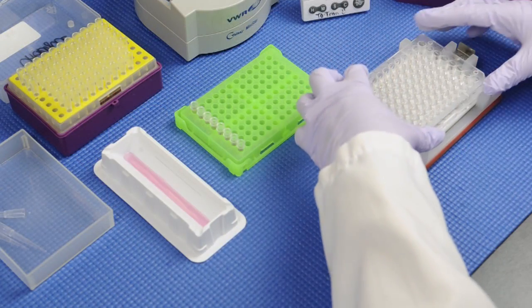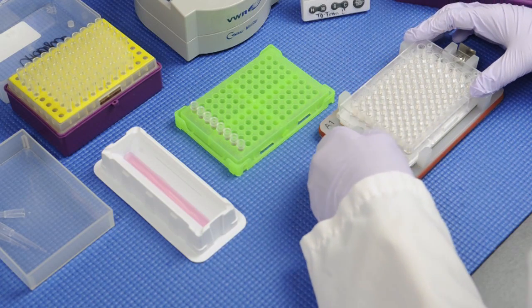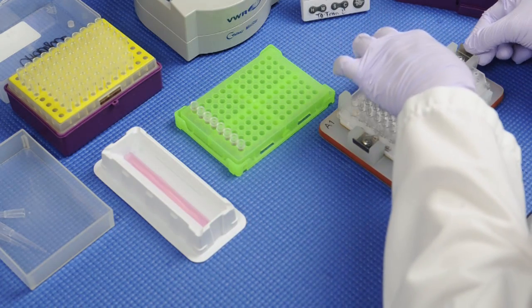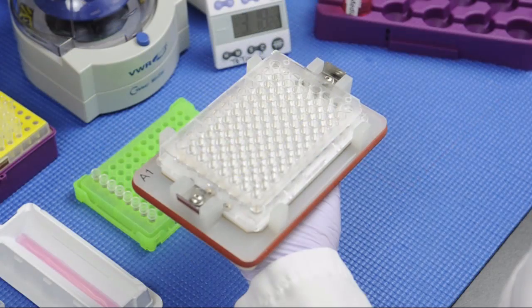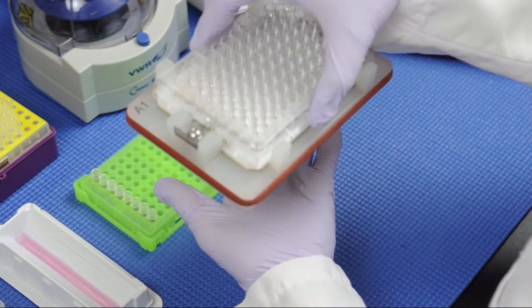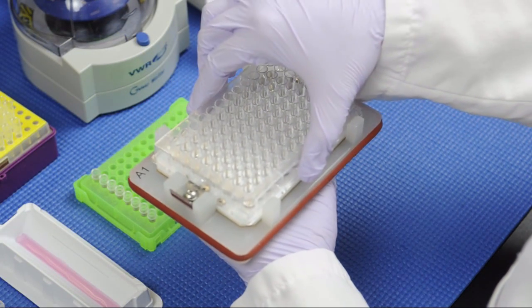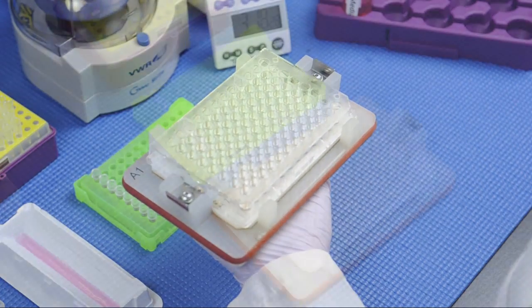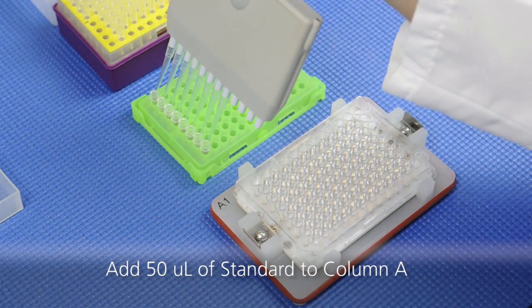Insert the 96-well plate into the handheld magnet and lock the plate into place with securing tabs. Ensure that the plate is locked into place by gently pulling on the 96-well plate. For this tutorial, the magnetic beads were previously added to the plate and washed.